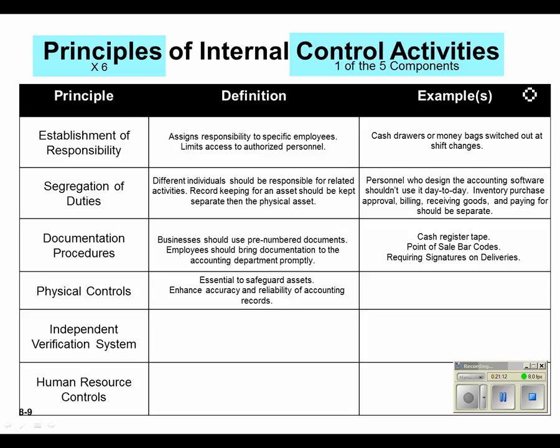Physical controls — these are really easy to conceptualize. Whatever you do to safeguard your assets makes your accounting records more solid. Things like putting your money in a safe or a vault — not everyone at your place of business has access to that, probably just the boss and shift managers. Electronic time cards make it very hard for an employee to lie if they're late. If you have to punch something into a computer or throw a time card into an automated machine, it's not going to lie for you.